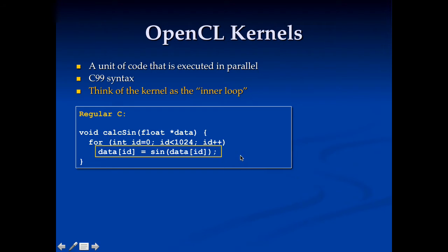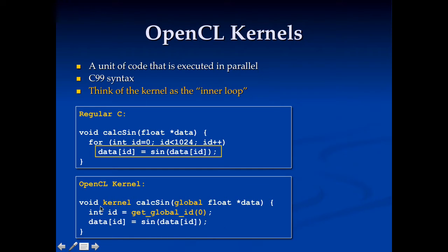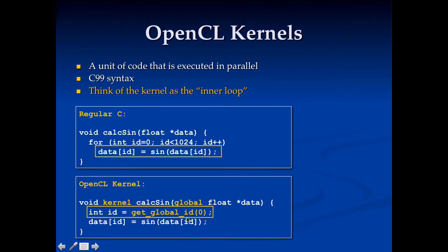The OpenCL kernel for this looks like this. We define it as a kernel called calculate_sine, we have our data coming in, and the first thing we do is get the global ID. Getting the global ID is basically saying which thread am I, and then we use that global ID to figure out which computation to do. The hardware runs one thread for every item in the for loop, and each thread knows which item it is and does the processing for that item.